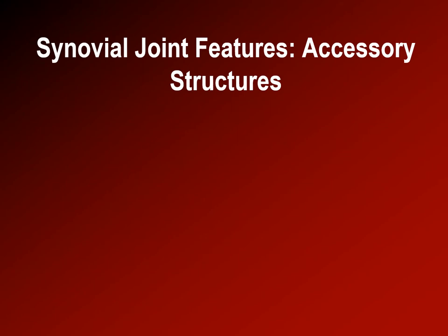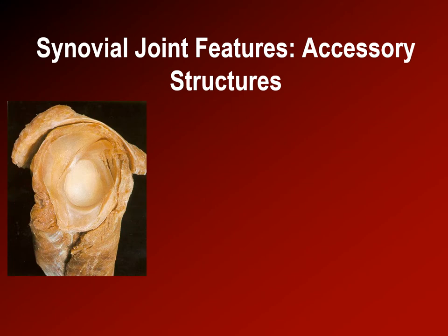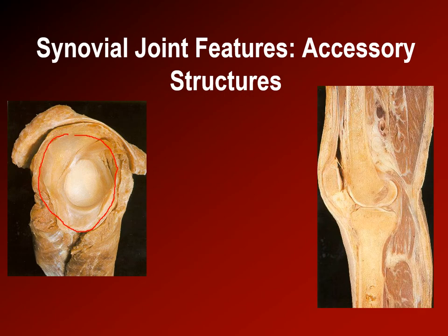Here we see examples of those structures. Looking at the glenoid portion of the shoulder joint where the humeral head articulates, I'm outlining the labral fibrocartilaginous rim that deepens the glenohumeral joint. Next is the fat pad — looking at a sagittal plane section of a knee — we can see some of the menisci and also the infrapatellar fat pad, which fills the space between the patellar ligament, the patella itself, and the intercondylar space.